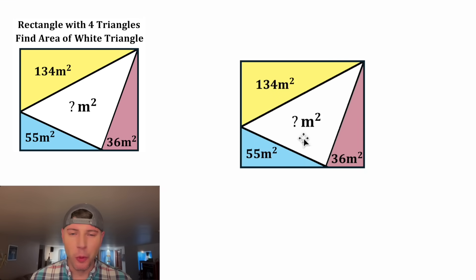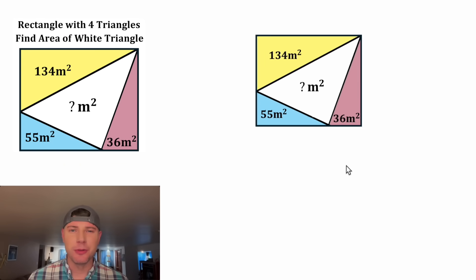We're given a rectangle made up of four triangles and it wants us to find the area of the white triangle. If you want to try it on your own, pause it right now, because I'm going to solve it in three, two, one.